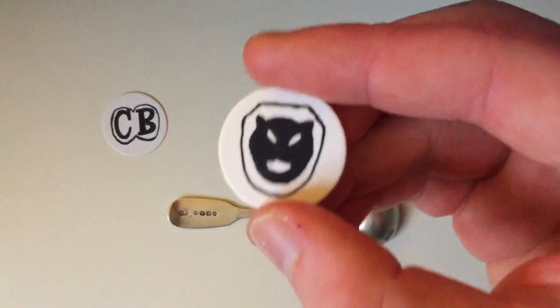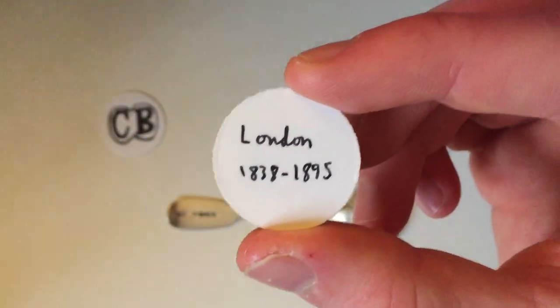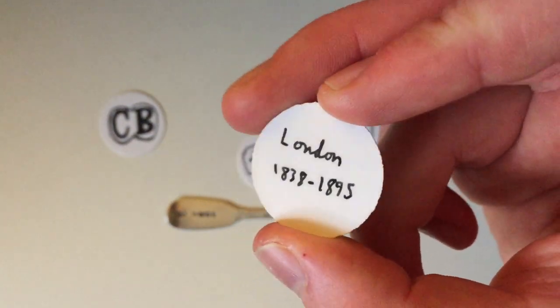As you can see, we've then got a leopard's head for London, fairly standard sort of design. This design, this particular one, with the shape of the outside, was used between 1838 and 1895.